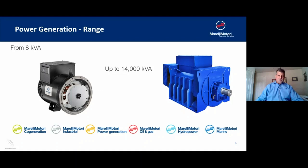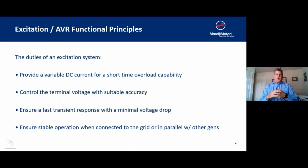Let's get into the functional principles of an AVR — it's fourfold. The duties of the excitation system are to provide a variable DC current for short-time overload, control the terminal voltage with suitable accuracy, ensure a fast transient response with minimal voltage drop, and ensure stable operation when the generator is connected to the utility or in parallel with other generators.